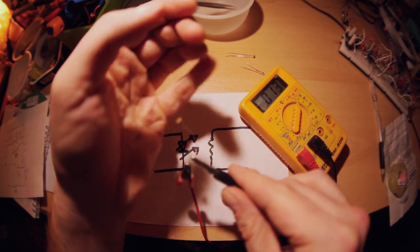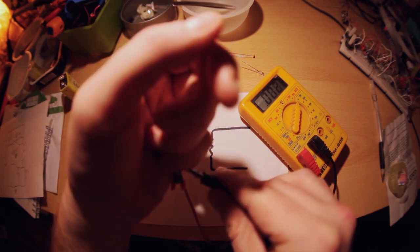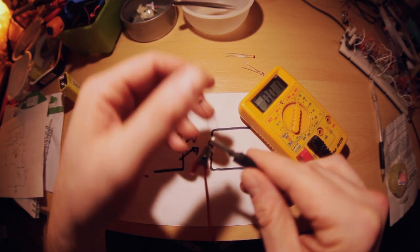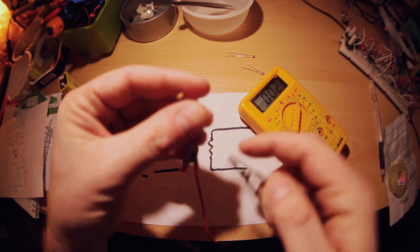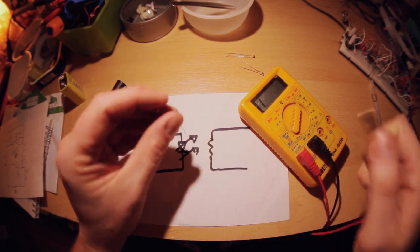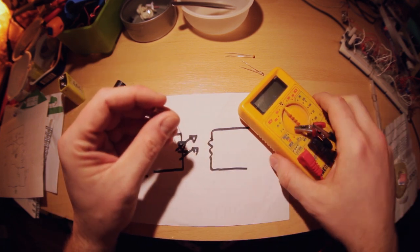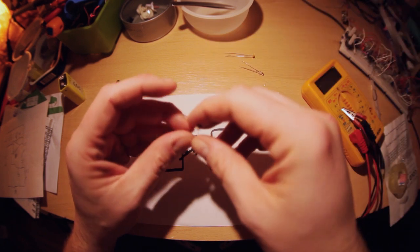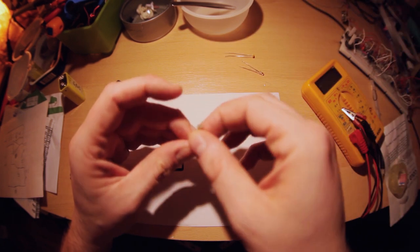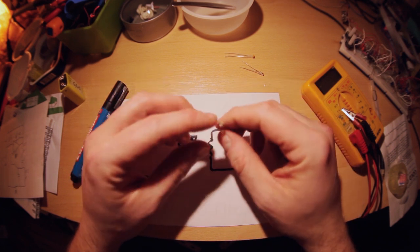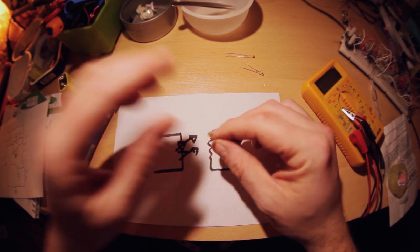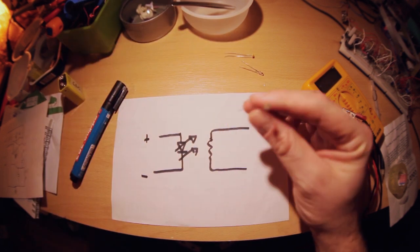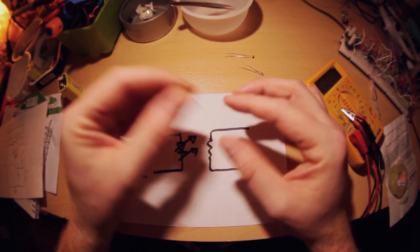And again if light comes, here we go. And this is the basic element that is used in light theramins, which are basically theramins which work with light. So you can move your hand closer or farther from the light sensing resistor and you are basically blocking more or less light coming to the resistor, and that changes the pitch of an oscillator.